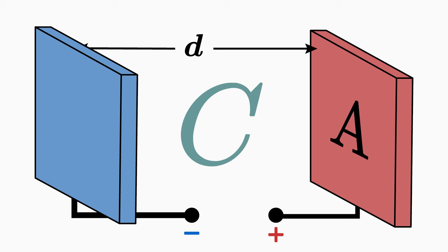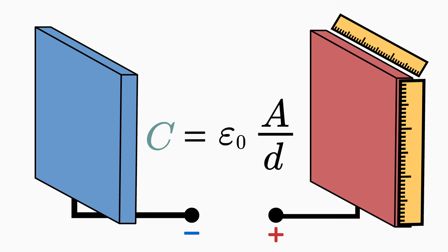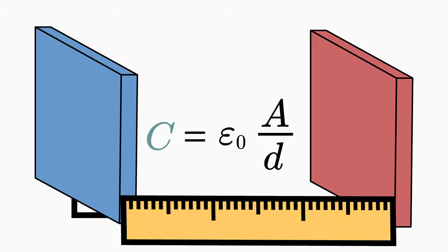You can calculate the capacitance of a plate capacitor as follows. Capacitance C is the electric field constant epsilon 0 multiplied by the plate area A and divided by the distance d. So to find out the capacitance of a plate capacitor, you only have to determine the plate area and measure the distance between the plates.